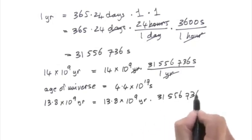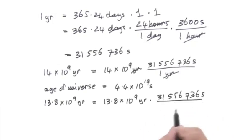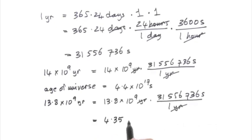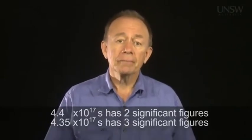My calculator gives me a new long number, but I keep only the first three. Rounding up, I get 4.35 times 10 to the 17 seconds. The difference is important because that last digit is significant — it gives me an idea of the precision of the value. We'll do more examples of significant figures as we go, and we'll expect you to be careful with them when doing problems.